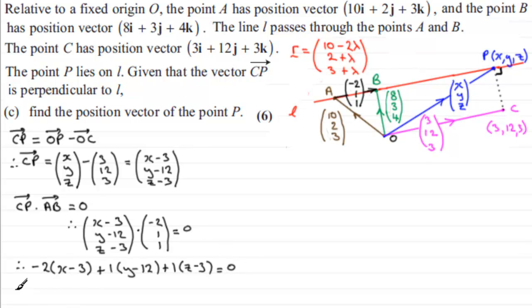Now, we know that C to P dotted with minus 2, 1, 1 is going to equal 0. Standard result for perpendicular vectors. So, we'll say that C to P dotted with A to B must equal 0. So, that therefore means that if we take C to P, X minus 3, Y minus 12, and Z minus 3, if we dot that now with the vector A to B, which is minus 2, 1, 1, it's got to come to 0.